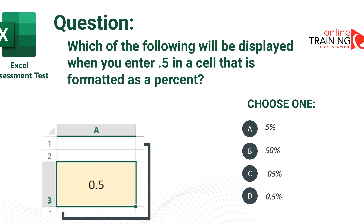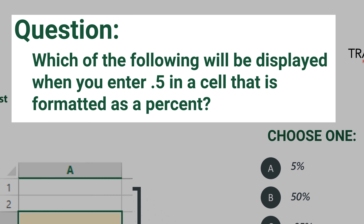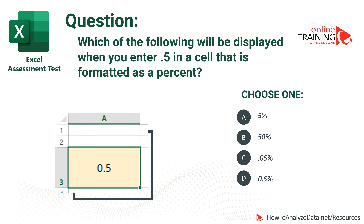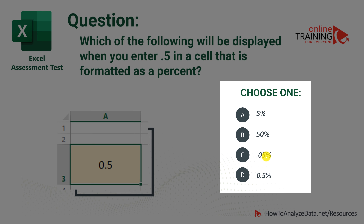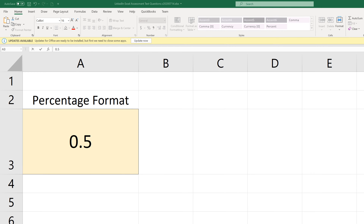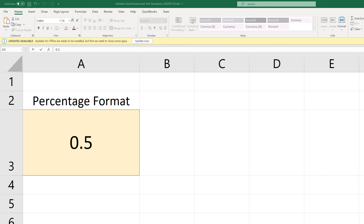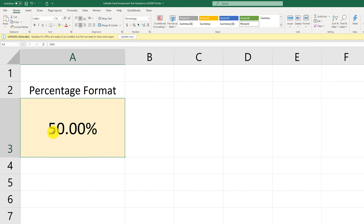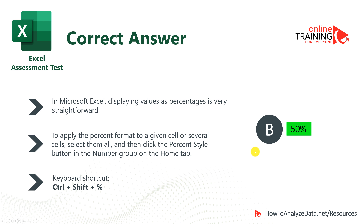Let's look at a question testing your knowledge of Excel data types and formatting options. Which of the following will be displayed when you enter 0.5 in a cell that is formatted as a percent? Four choices: 5%, 50%, 0.05%, and 0.5%. When you have a value in a cell and convert it into percentage, Excel treats the value as part of the whole. For example, 0.5 is 50% of 1, which represents 50%. When you convert this value to percentage by selecting the percentage data type, it will show 50%. The correct choice is B — 50%. To convert values, you can also use the keyboard shortcut Ctrl+Shift+%.